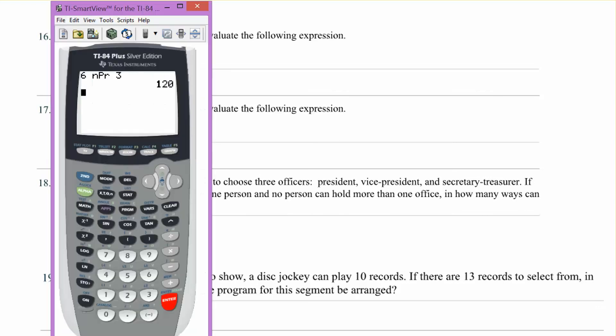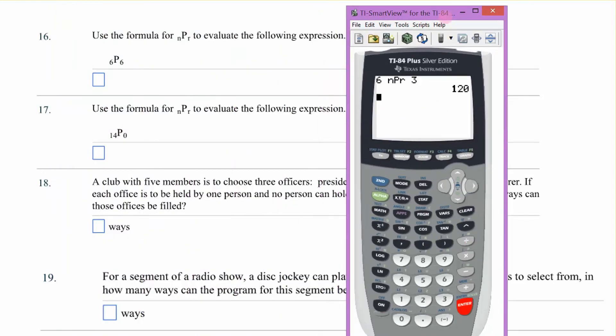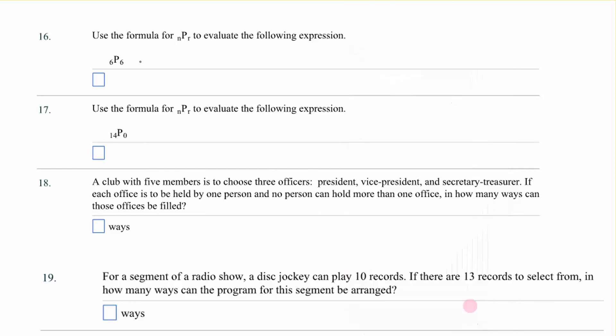Let's practice with the nPr notation again using the calculator. So I'm going to do this one. I'm going to put in six math. Go down. And I'm taking six items. And I'm taking them six at a time. And I will have 720 different ways to put those on a shelf.